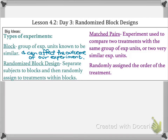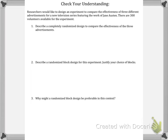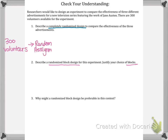Now for the check your understanding. Researchers want to design an experiment to compare the effectiveness of three different advertisements for a new television series featuring the work of Jane Austen. There are 300 volunteers available. First, describe a completely randomized design: take the 300 volunteers and randomly assign them into three groups of 100 each to receive each of the three different advertisement treatments.